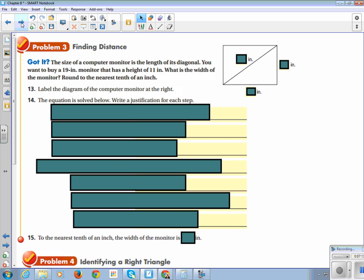The size of a computer monitor is the length of its diagonal, which is also true for TVs. When you buy a 70-inch TV, it's 70 inches along the diagonal, not 70 inches from side to side. You want to buy a 19-inch monitor that has a height of 11 inches. What is the width of the monitor? Round to the nearest tenth. Let's label our diagram. We know that our height should be 11, and our diagonal should be 19, and we are going to call our missing value B.